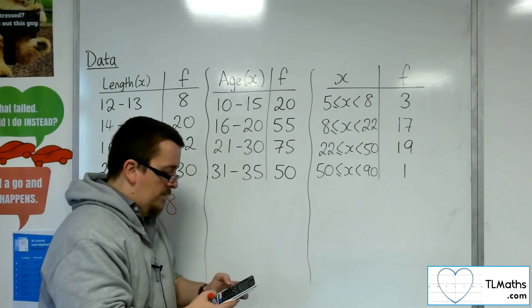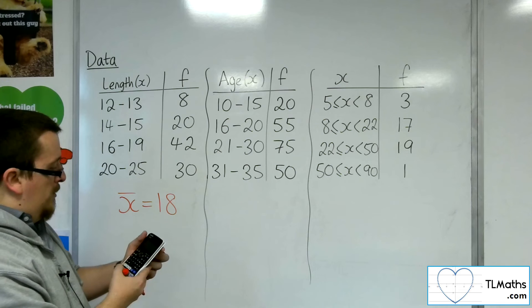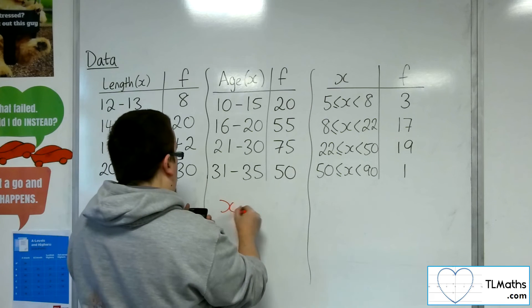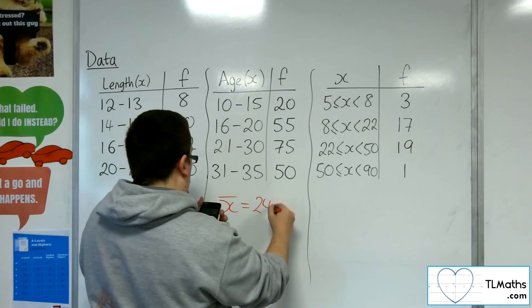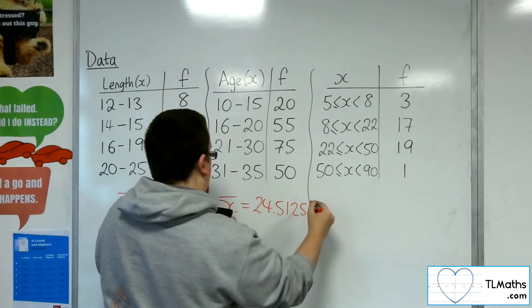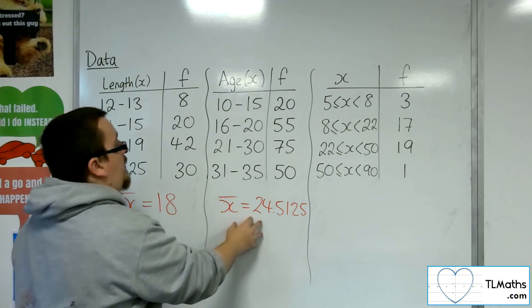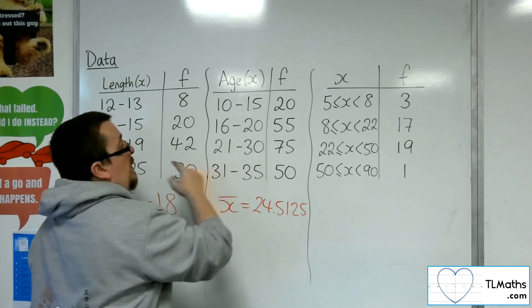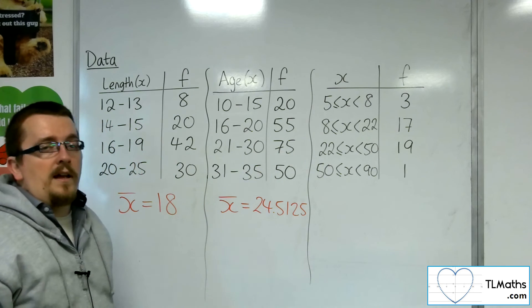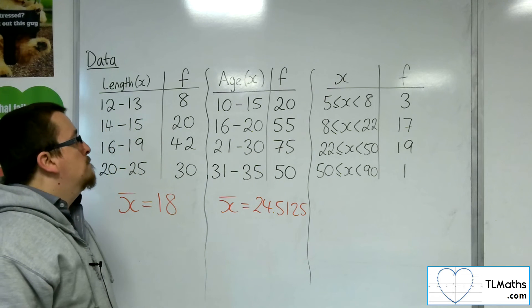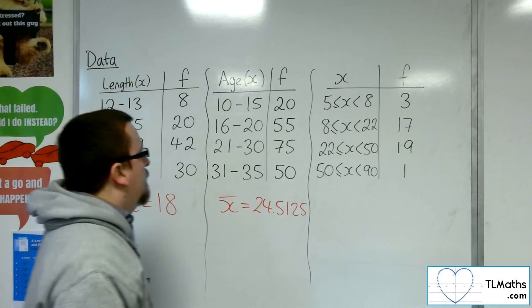Press the AC button, option, number 2 for one variable, and we get an x bar mean of 24.5125. Does that make sense? Well yes, because that's where the largest grouped set of data was, the highest frequency.